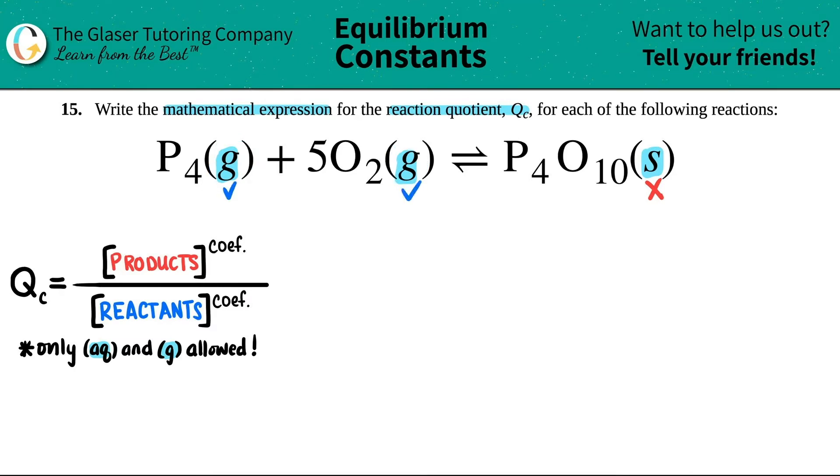All right, so now we're ready to rock and roll. So QC equals something divided by something else. So I'm just going to put my line already. Now remember it's products divided by reactants, but I can't use this product, right? This goes bye-bye.